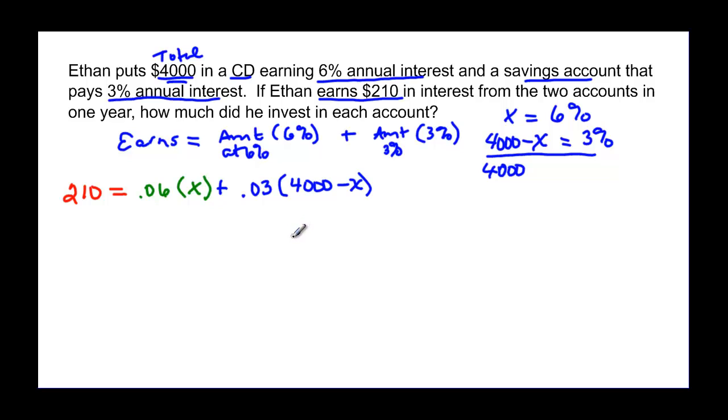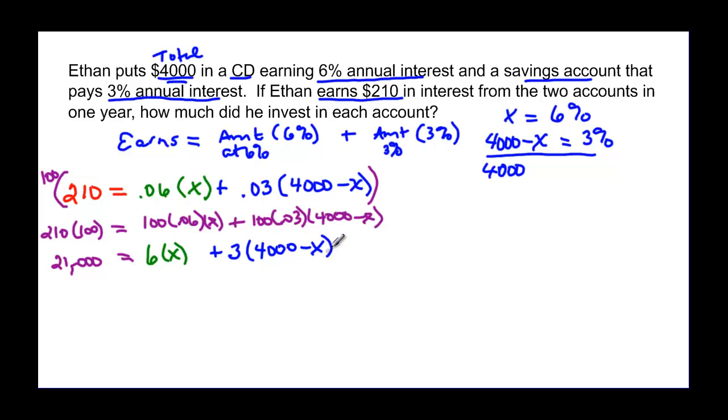We have decimals so we need to clear them. It's going to make for big numbers but pull your calculator out. We have two decimal places so we're going to multiply everything by 100. So 210 times 100 is going to be 21,000. And 100 times 0.06 times x is going to be 6 times x. And then plus 100 times our 0.03 times our 4,000 minus x. That gives me plus 3, and I still have to distribute that to the 4,000 minus x.